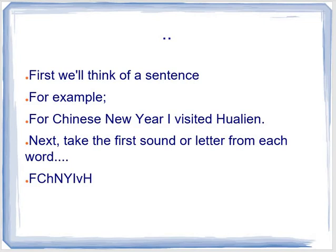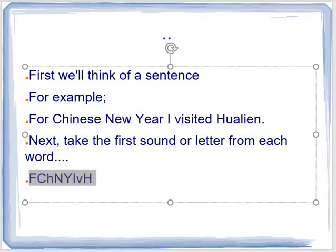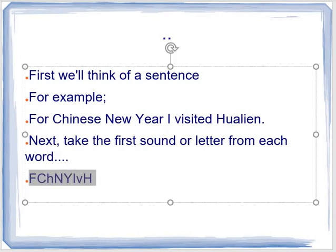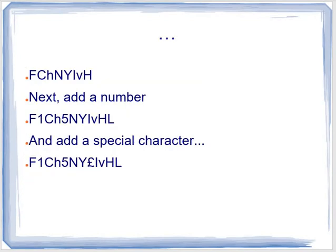Next, take the first sound or letter from each word, and we have F-C-H-N-Y-I-V-H. Then add a number. Some people add a number at the end; I like to mix it up in the middle after the first two sounds.